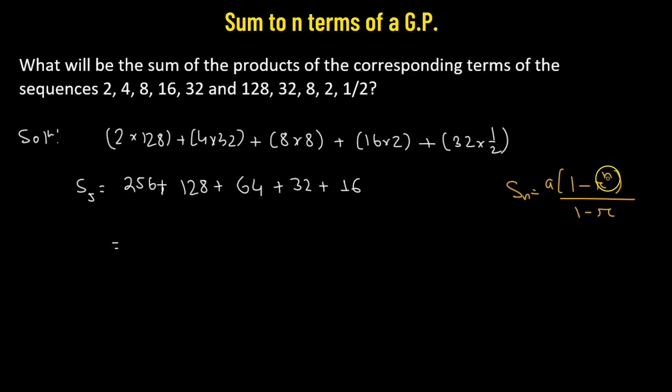The reason we're using 1 minus R raised to the power of N here is because if we calculate the common ratio of the given series, the R will be 128 divided by 256. So this is 1 over 2, which is less than 1. So this particular sum holds for values of R less than 1.